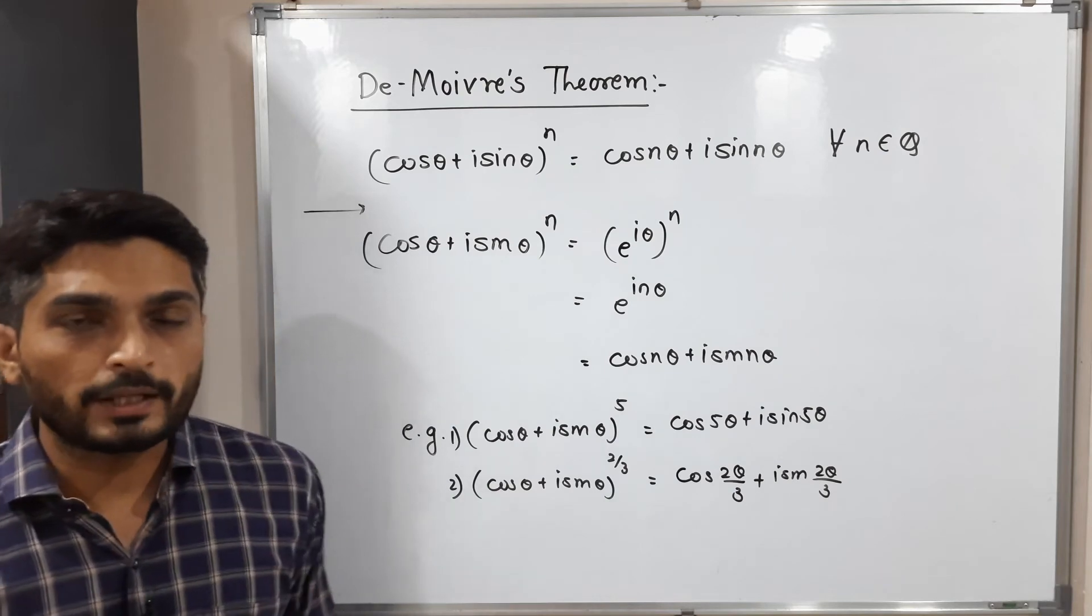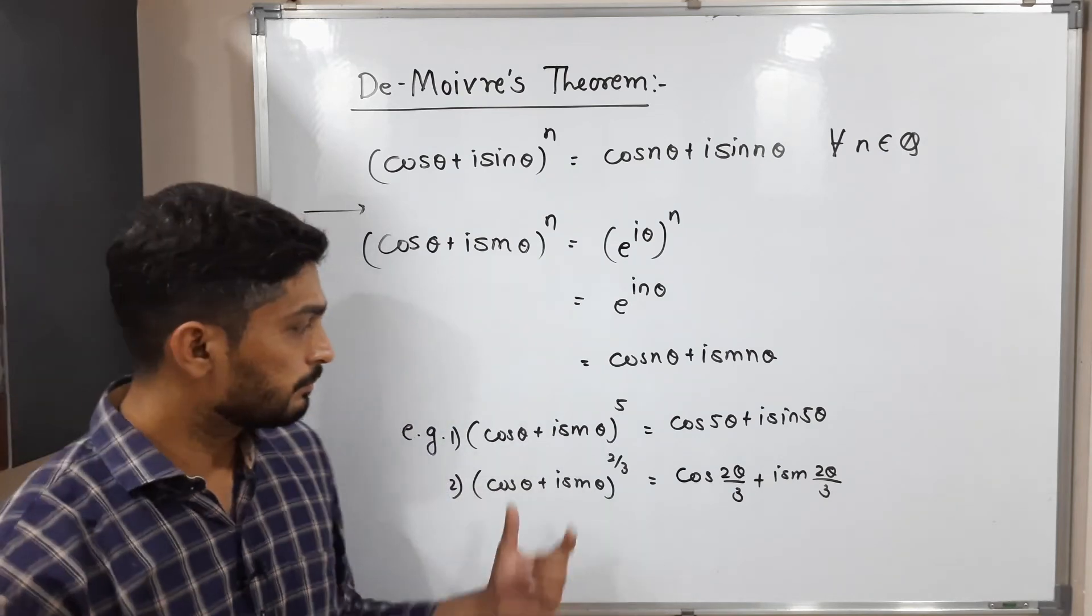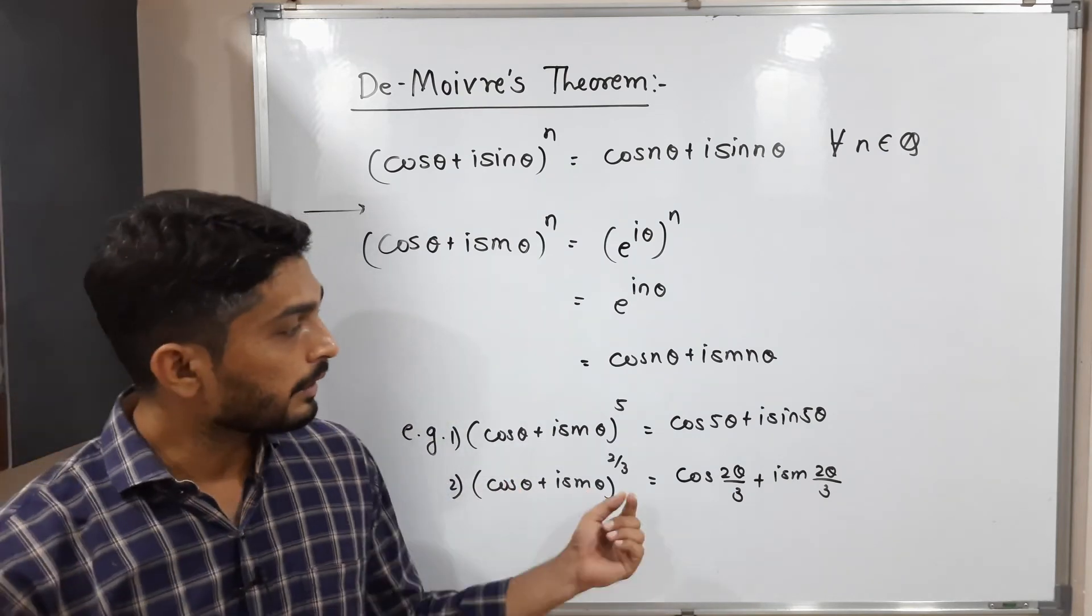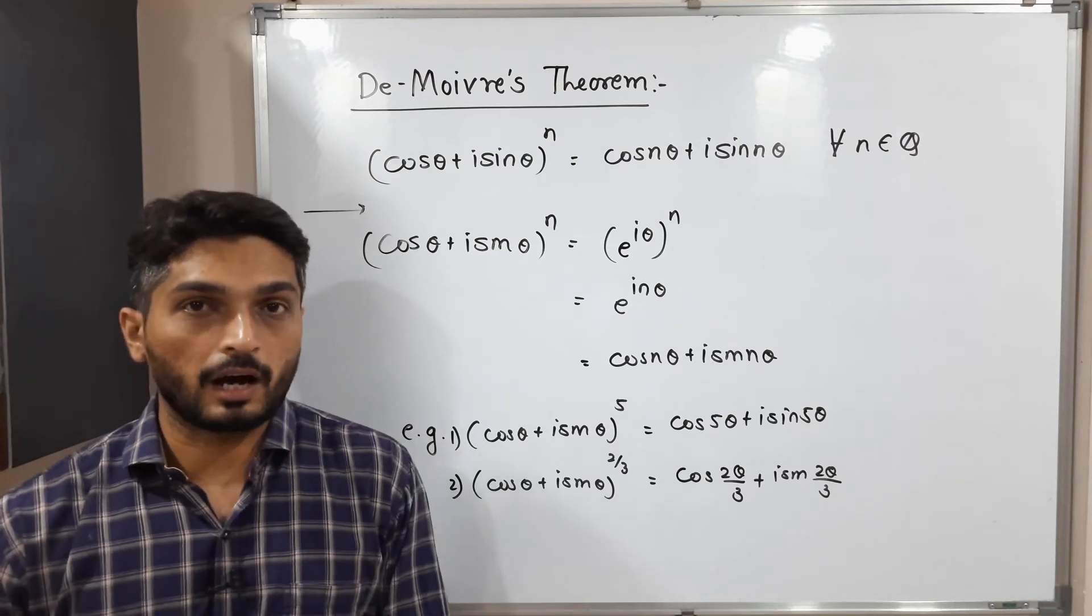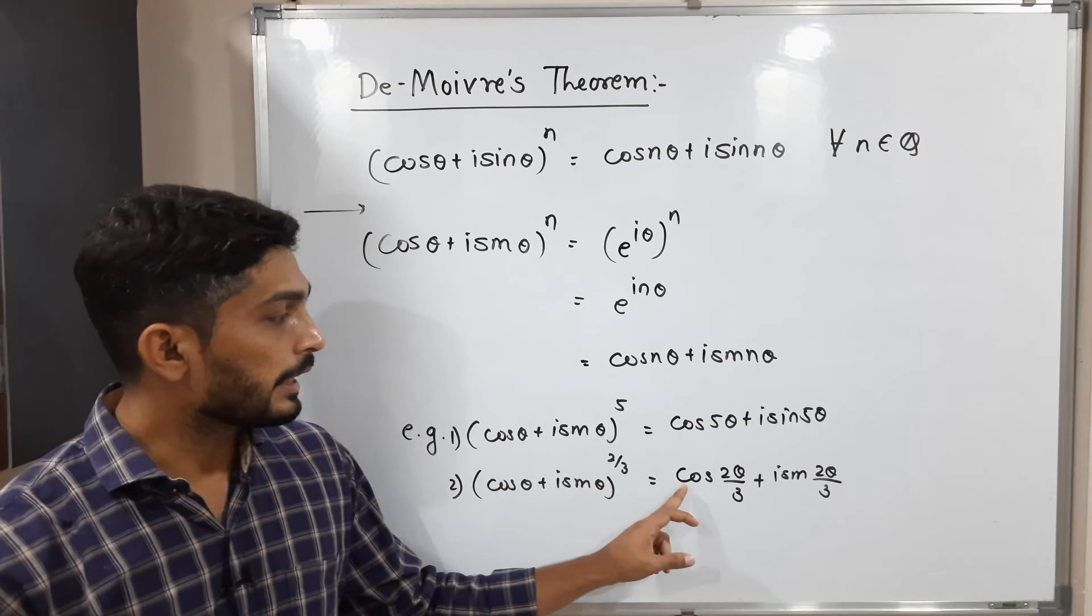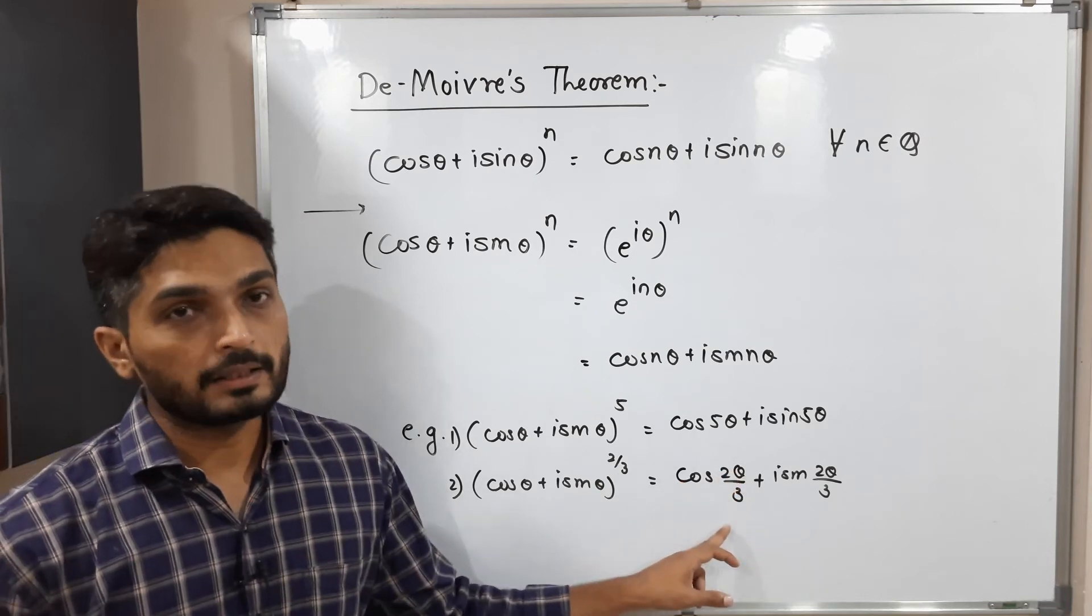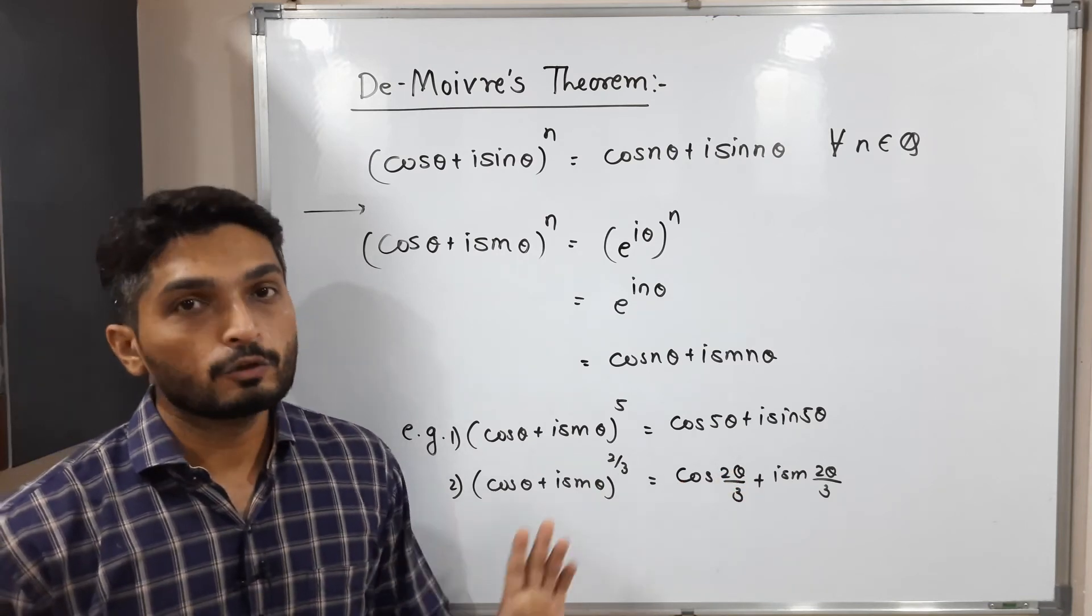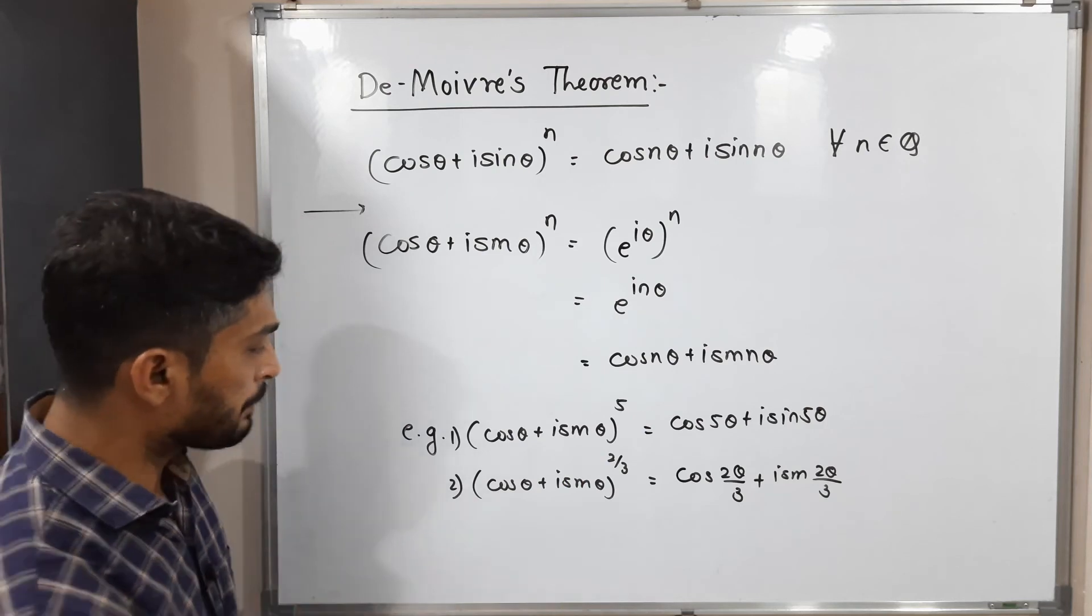What it means? Whatever the power you have, power of that bracket, you can write as a multiple of theta. Here the power we have 2/3. So we can write cos(2θ/3). That means we are multiplying theta by 2/3, okay. Let me add one thing.